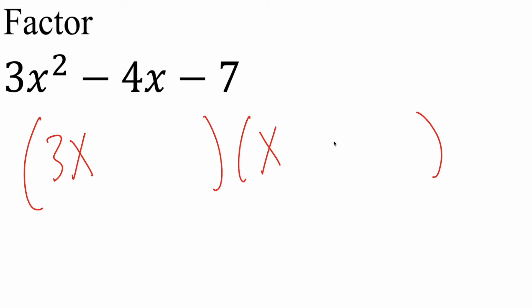And just for practice, let's just say I put a negative 1 here, and a positive 7 here. 3x times negative 1 is negative 3x, 7 times x is 7x, and 7x minus 3x is positive 4x. But here I have a negative 4x. So let's see if we can switch it.